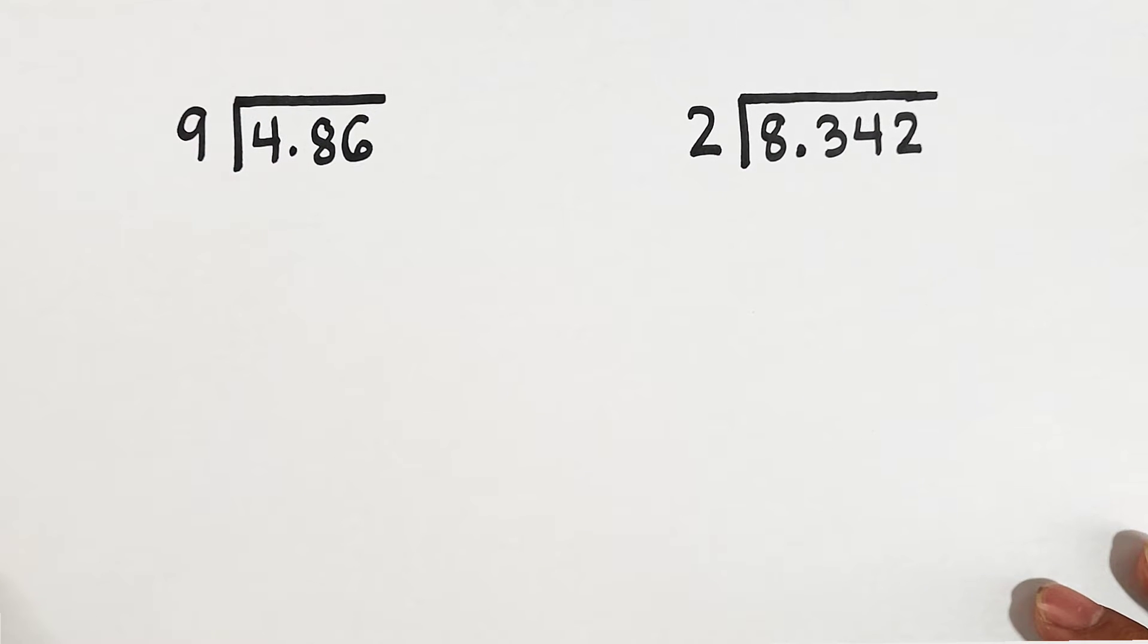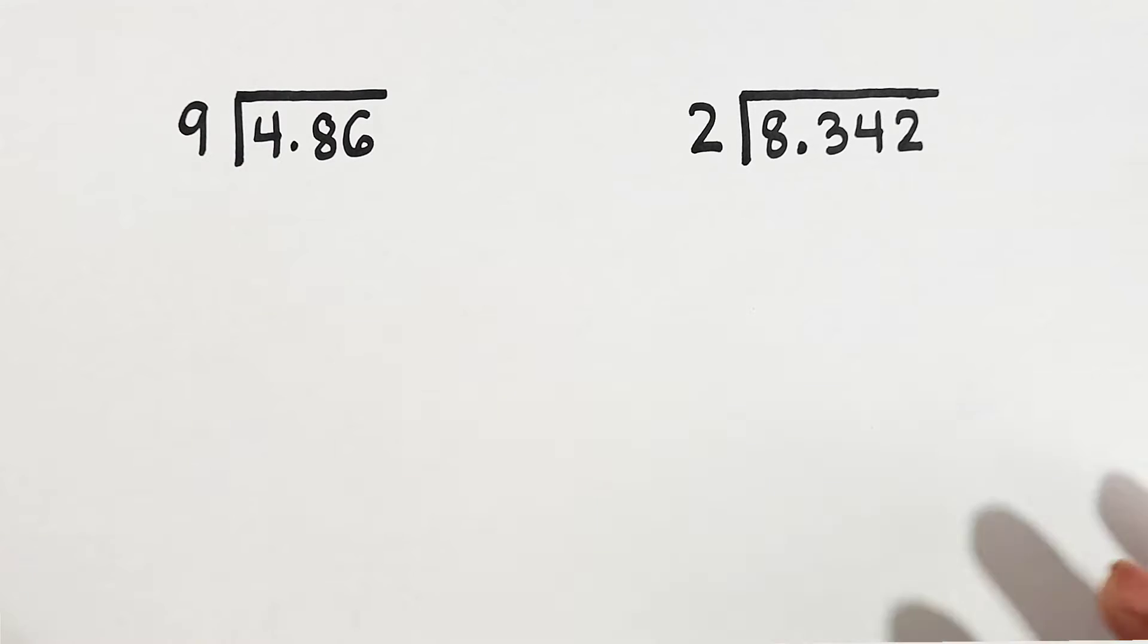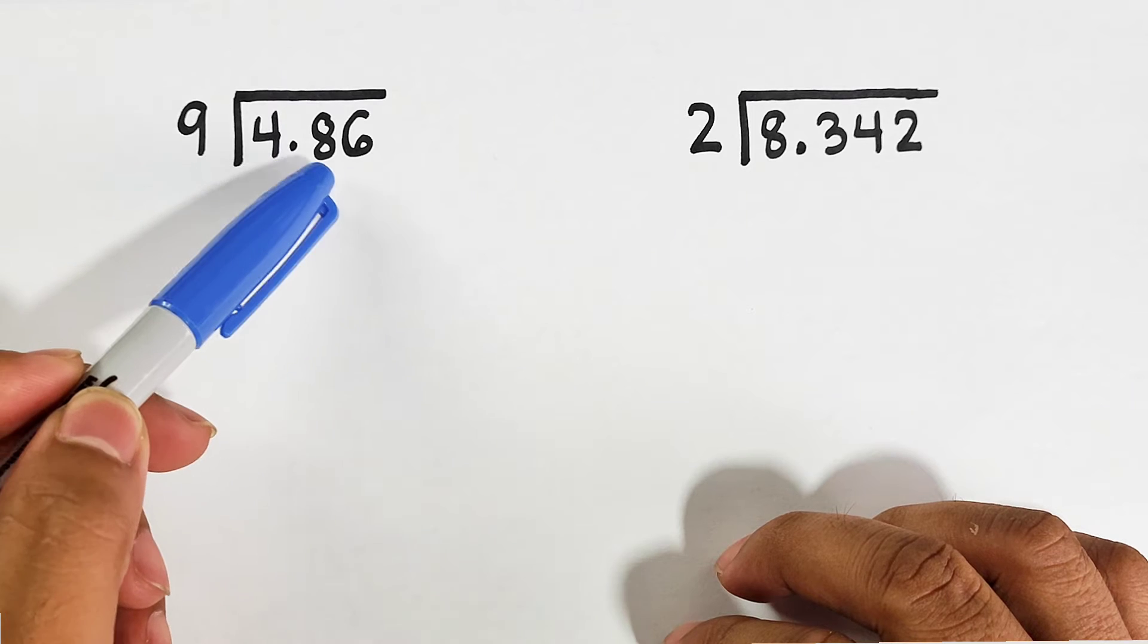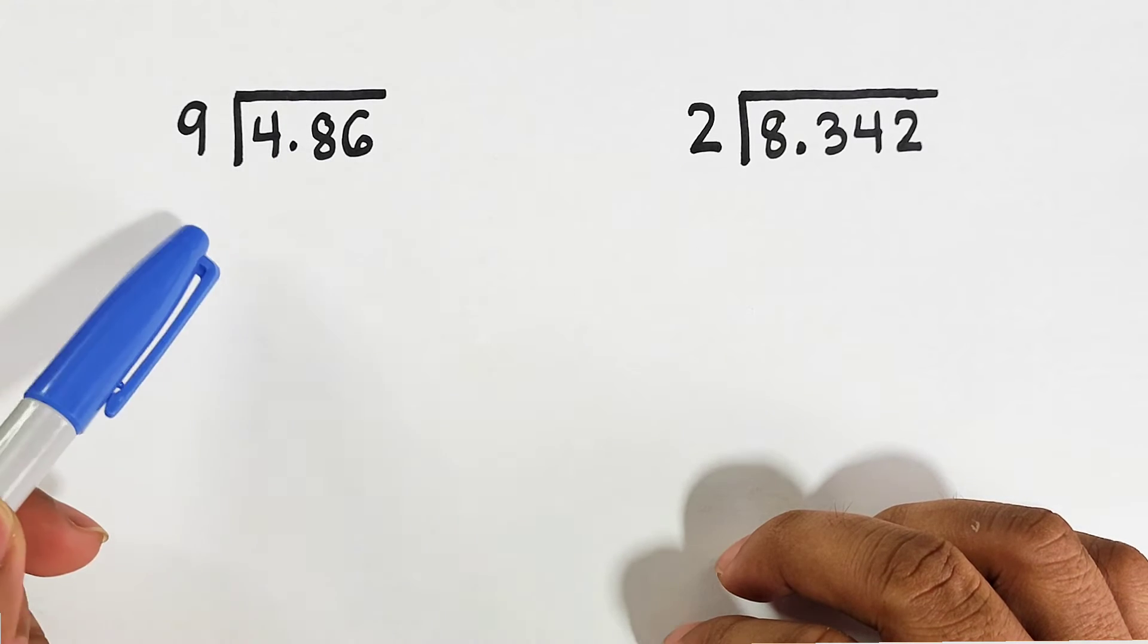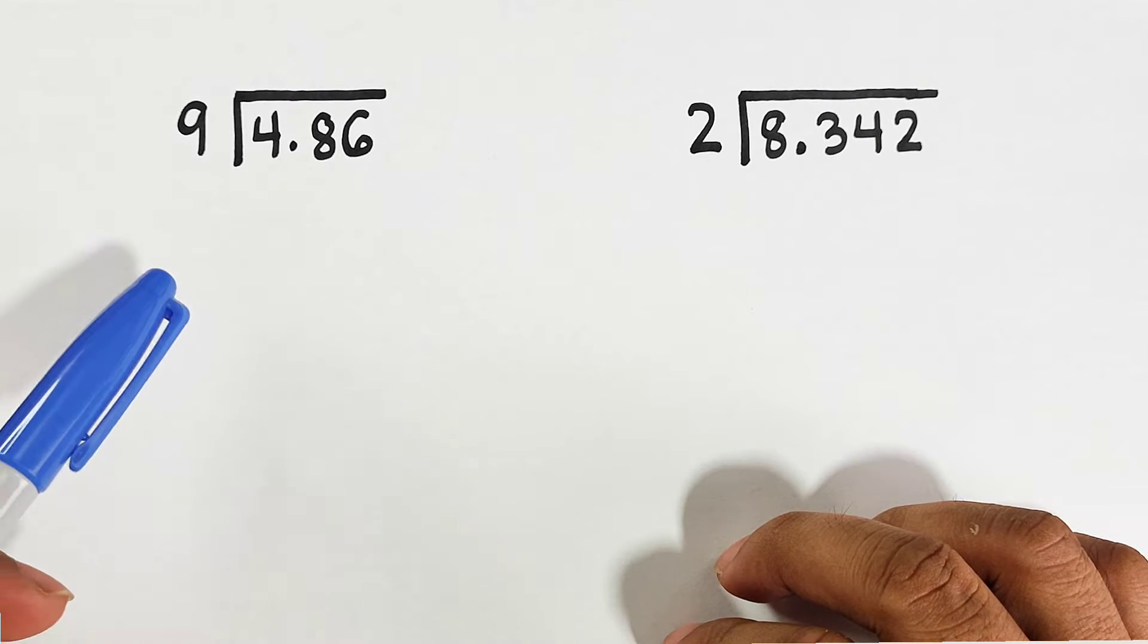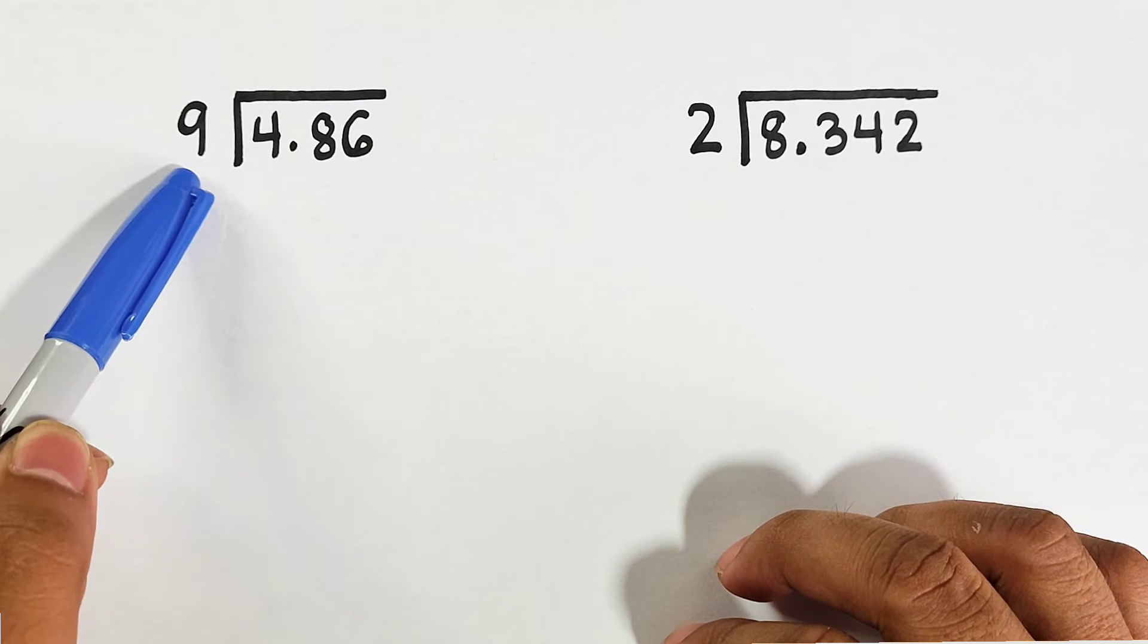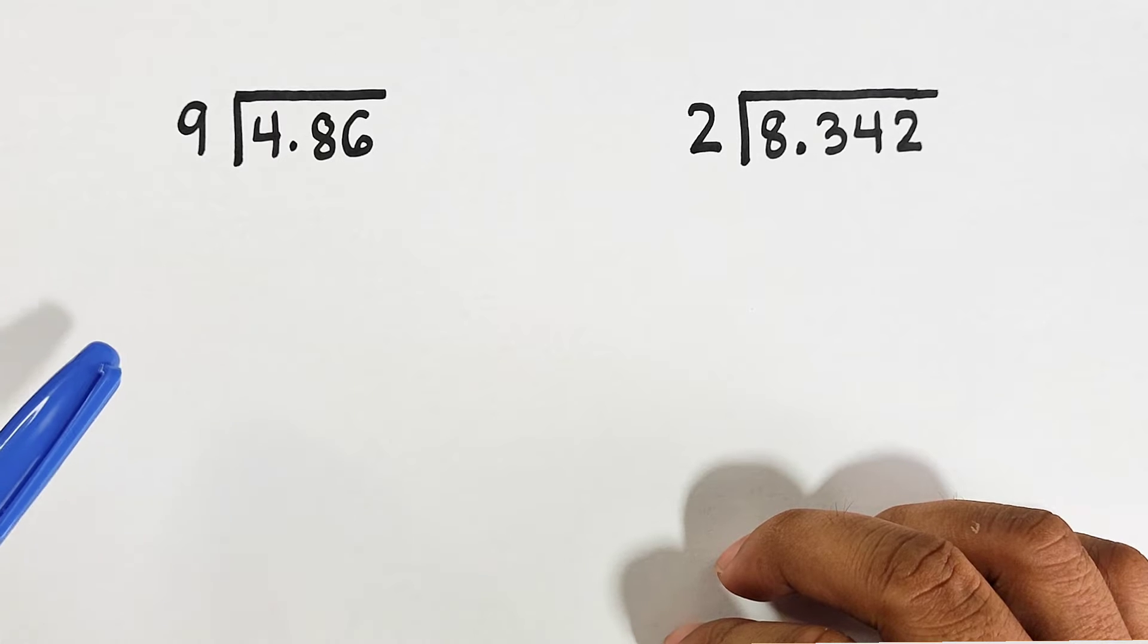We're dividing decimals by a whole number. Let's dive into the first example. What we have here is 4.86 to be divided by 9. Here, our 4.86 is your dividend while this whole number 9 is your divisor.